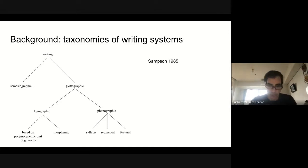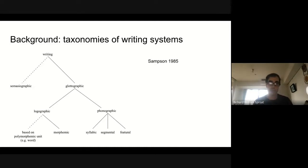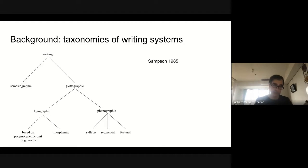A lot of researchers since Gelb have taken a less teleological view. If you look at Samson's taxonomy in his 1985 book, he separates writing into various categories. On one hand, he has what he calls semasiographic writing systems. Then what he calls glottographic — a fancy word for saying it represents linguistic information — and within that, he splits systems into two branches: logographic, where the writing system represents some aspect of the word but not specifically phonological information, more related to the word's meaning, and then phonographic writing systems.